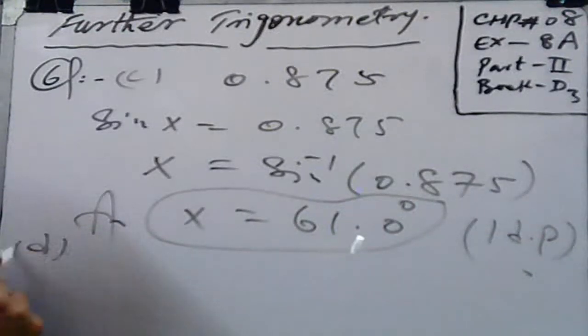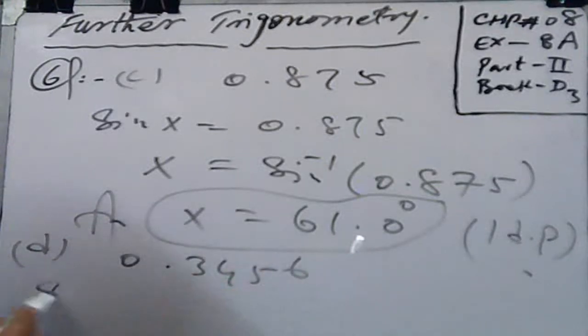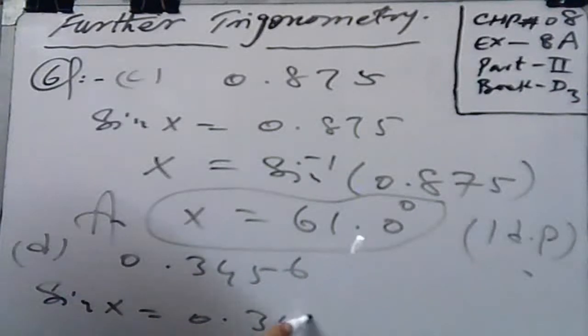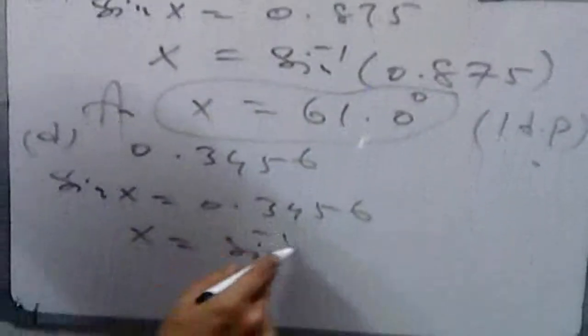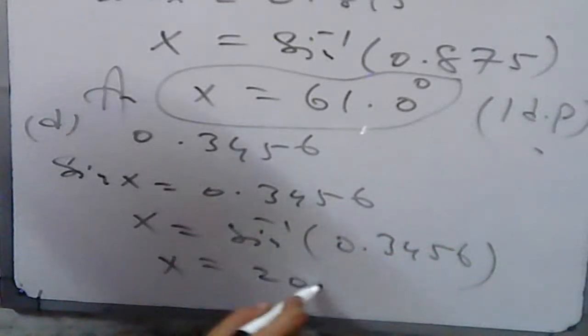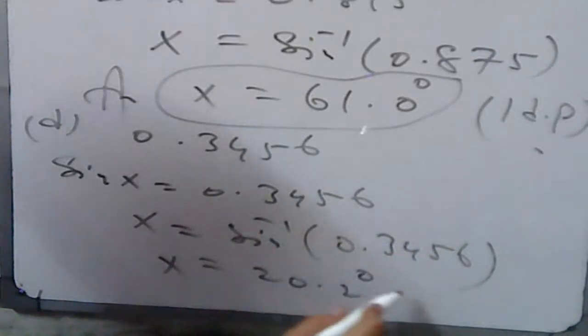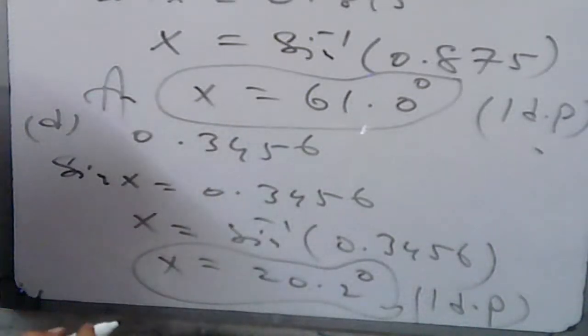In part d, we have 0.3456. So sin x is equal to 0.3456. The value of x is sin inverse 0.3456. With the help of a calculator you will get 20.2 degrees, up to 1 decimal place. Once again, 20.2 is less than 90, so it is an acute angle. Here is your result.